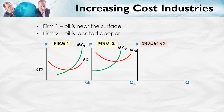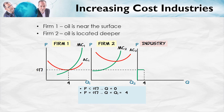If the price of oil is below $17, neither firm can make a profit — that's below the minimum point of the average cost curve for both firms. So the industry supply is zero. At $17, firm one just breaks even and will enter the industry, so industry output equals firm one's output: four units. Firm two doesn't enter because the price is still too low and it would take a loss.